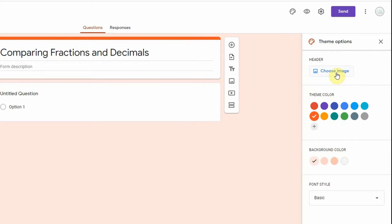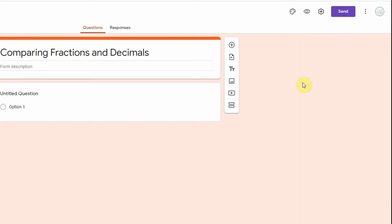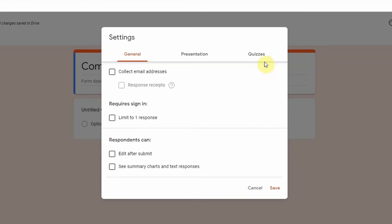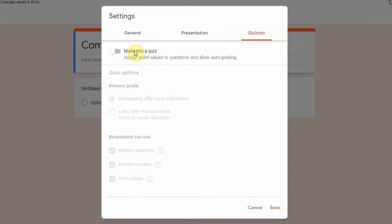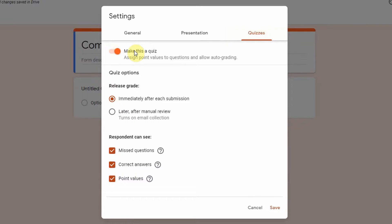And the next thing I want to show you that you need to do, and this is very important, is you're gonna go up here to the cog which is the settings and I want you to go to quizzes and you're going to make this a quiz. So this will allow students to check their work when they are finished and you're going to click save.